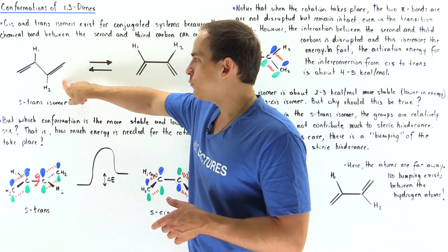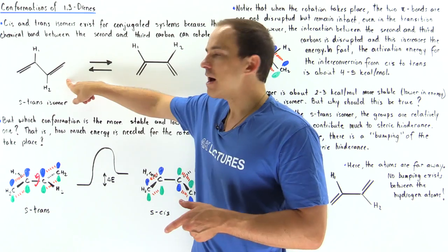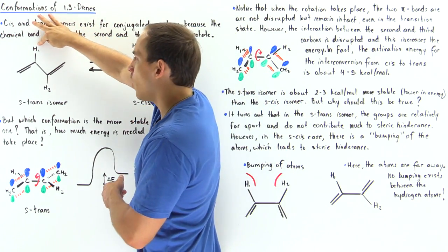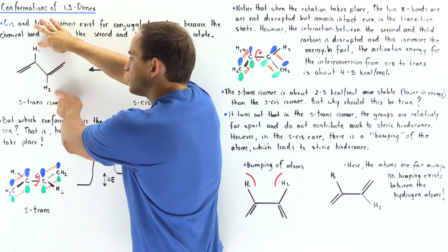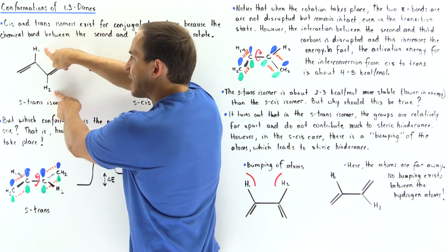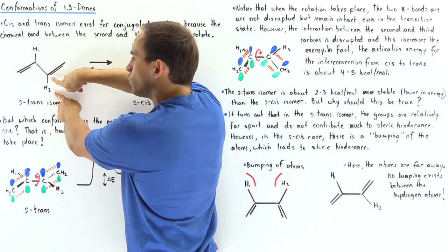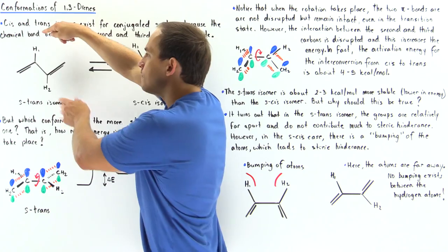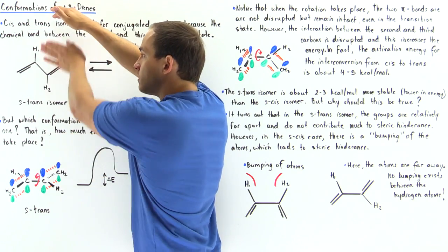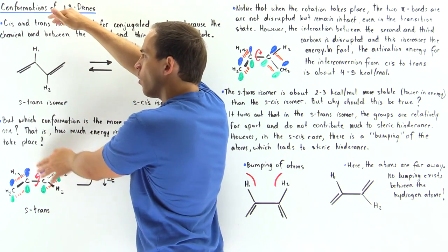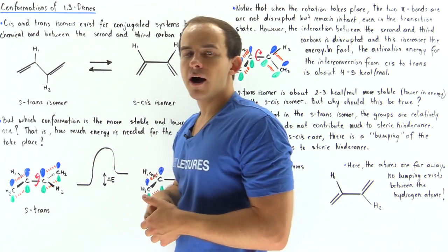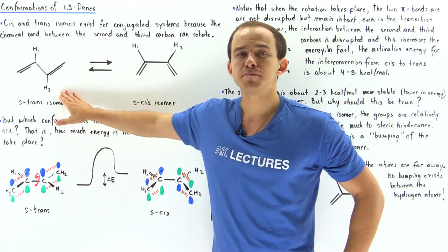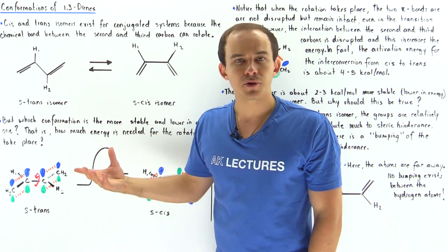If we look at the following conformation, H1 attached to carbon 2 and H2 attached to carbon 3 are found on the same plane — on the plane of the board — but are found on opposite sides. This means this must be the trans isomer.